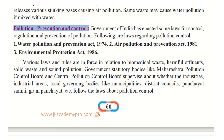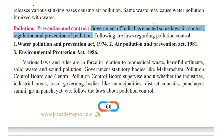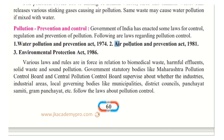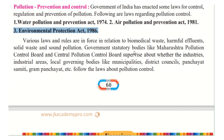For pollution prevention and control, the Government of India has enacted — that is, brought into force — laws for the control, regulation, and prevention of pollution. These are punishable rules that cannot be broken. The key laws are: the Water Pollution Prevention and Control Act of 1974, the Air Pollution Prevention and Control Act of 1981, and the Environmental Protection Act of 1986.